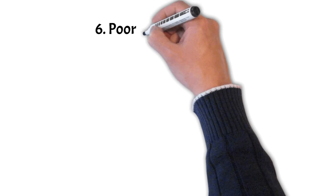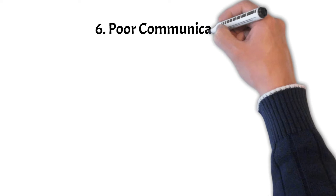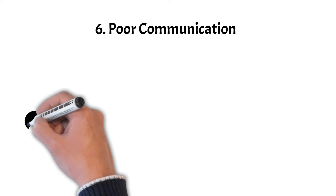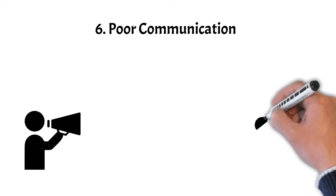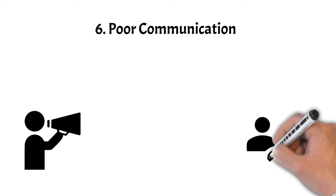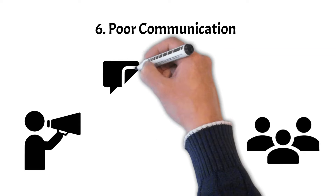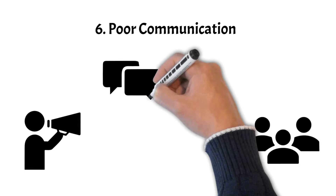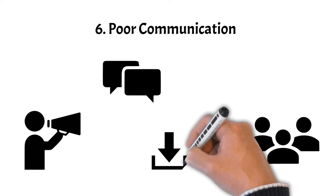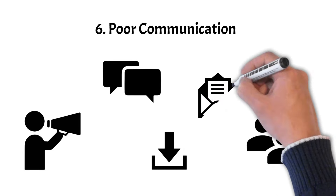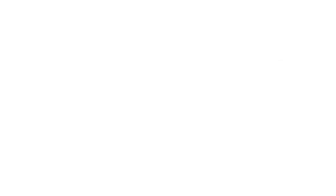Pitfall 6 is poor communication. Communication is a lifeline in project management. Effective communication among team members and stakeholders is vital for keeping everyone on the same page, resolving issues, and maintaining project momentum. Inadequate communication can lead to misunderstandings, conflicts, and a breakdown in collaboration. To tackle this pitfall, establish clear channels for communication, encourage open and transparent dialogue, and foster a culture that values effective communication.